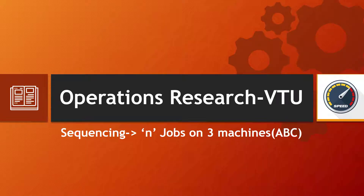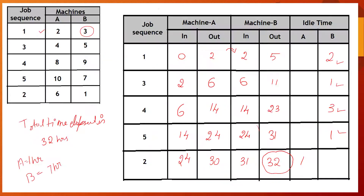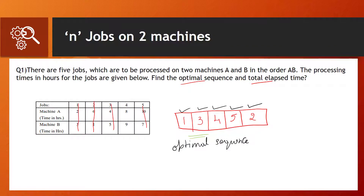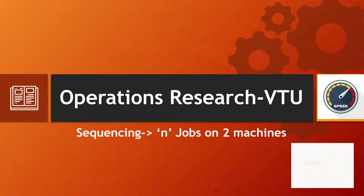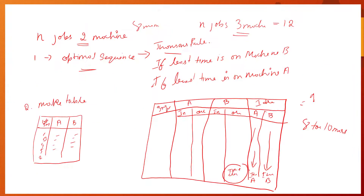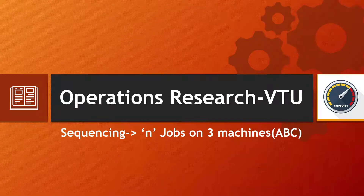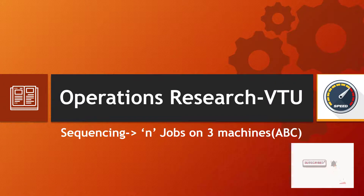Hello everyone. Welcome back to space. In this video, we will be seeing sequencing of n jobs on 3 machines. For example, there will be 3 machines A, B, C. In the previous video, we have seen the same type of problems on 2 machines. We will be having n jobs on 2 machines. So in this video, we will be seeing the same type of problem but with 3 machines. If you have not subscribed to our channel, please do subscribe to support us.